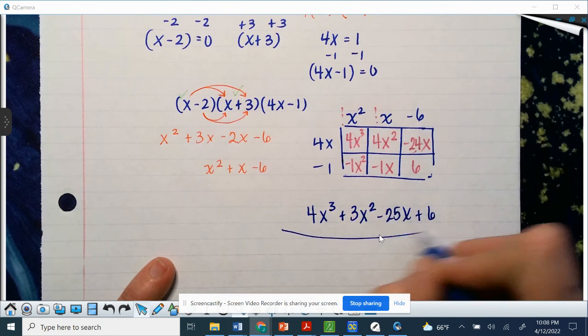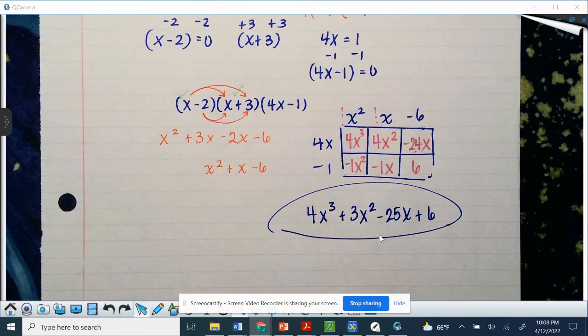So this is the polynomial that has roots at 2, negative 3, and 1 fourth. All right guys, great job.